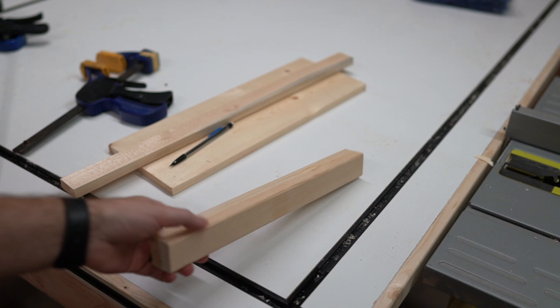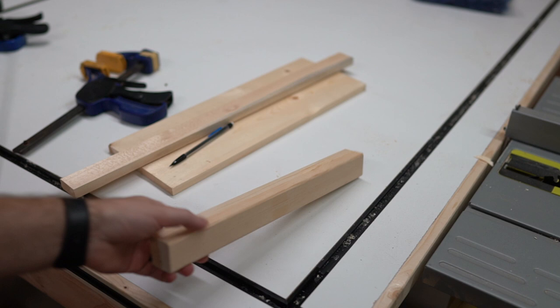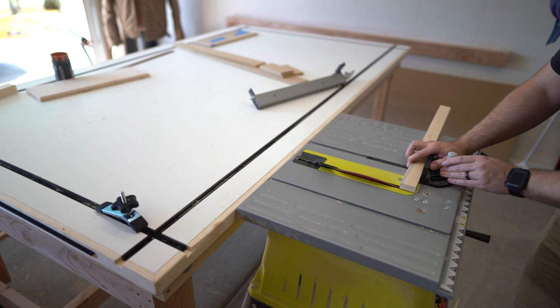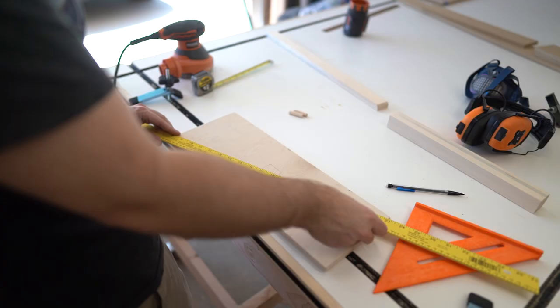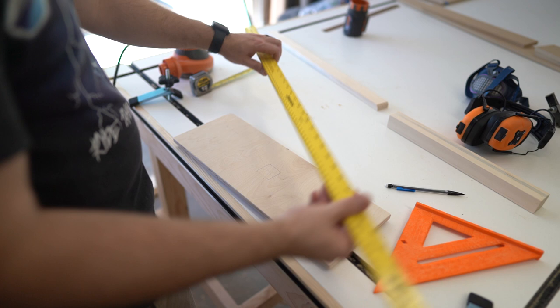Next step, I cut my 1x2s. I'll have all the cuts and the dimensions in the description. And then I laminated them together for the upright column in the center. Just to give it a little bit of a thickness. And then beveled the edges on the top piece of the tee.